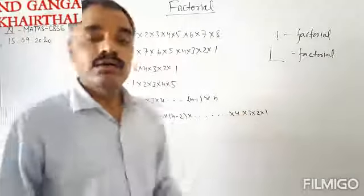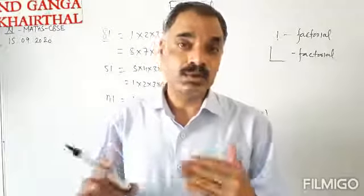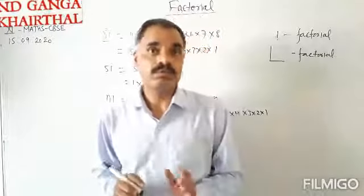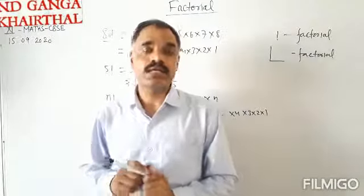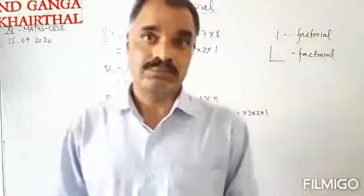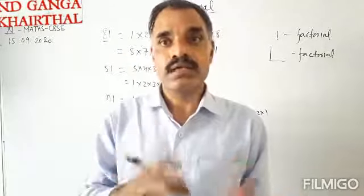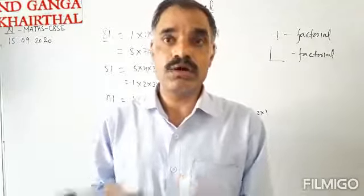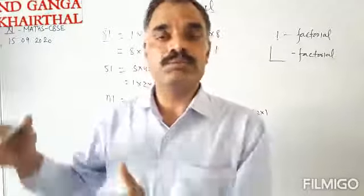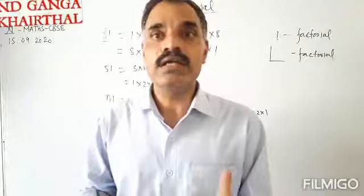So this is the definition and how we can find the value of factorial of a given number. Now, the main and most important thing is that we can find the factorial of only whole numbers. We can find the factorial of numbers greater than or equal to 0. Means we can find the factorial of 0, 1, 2, 3, up to n.